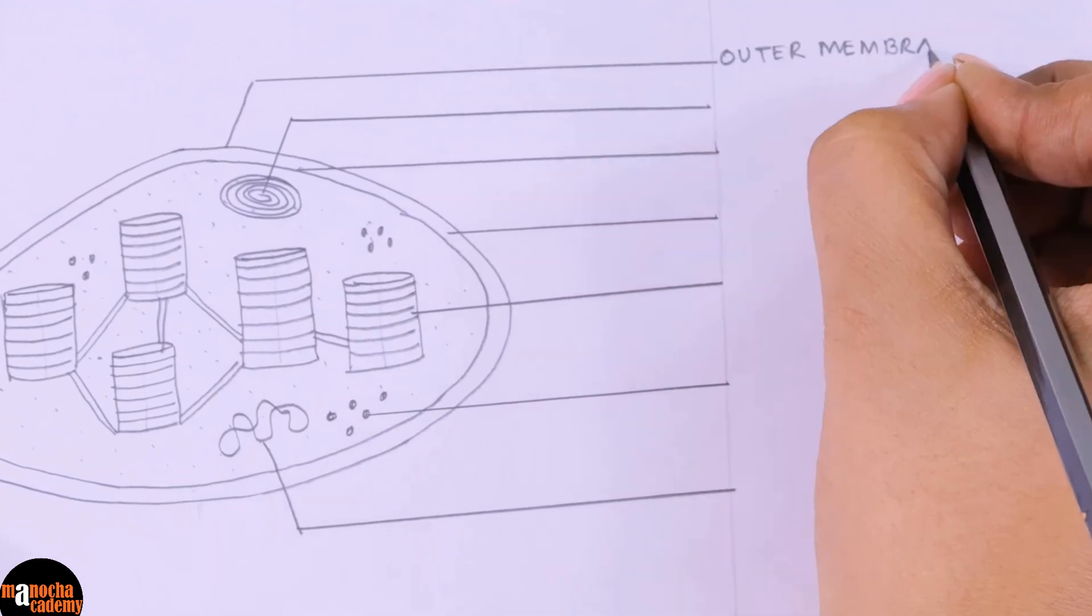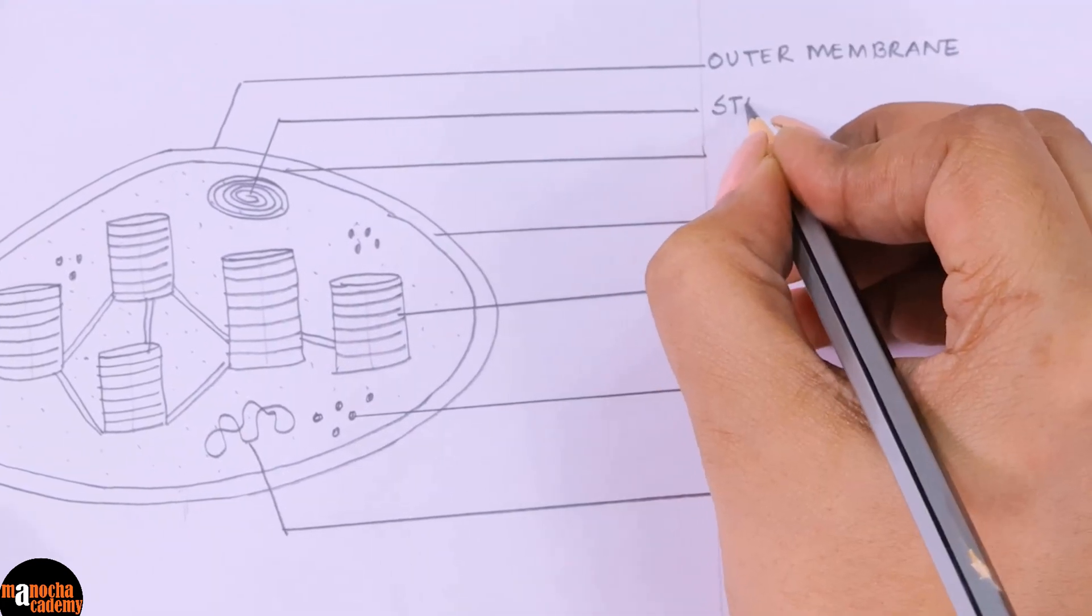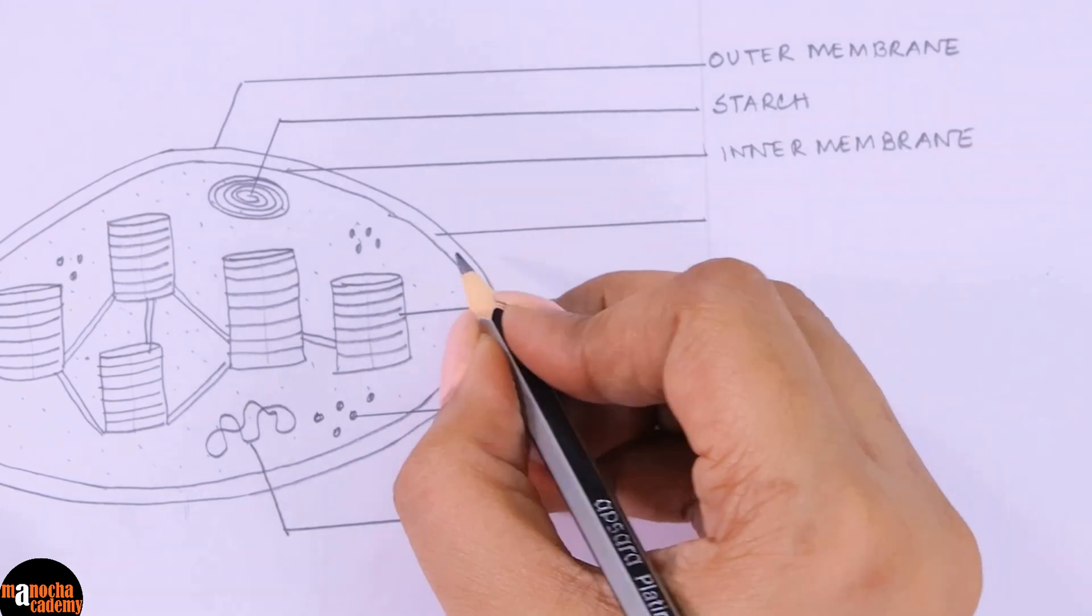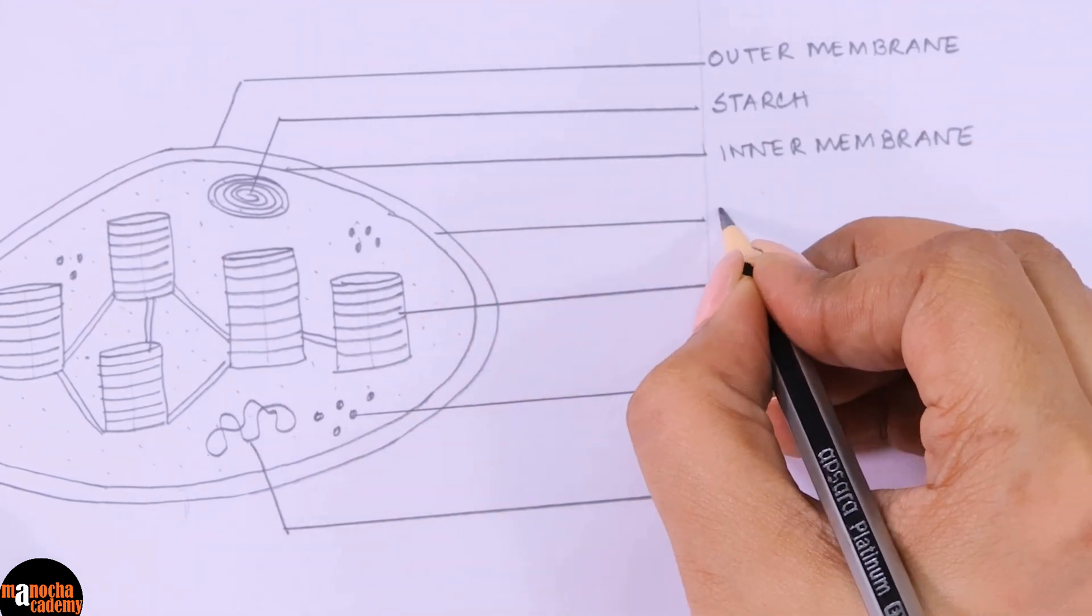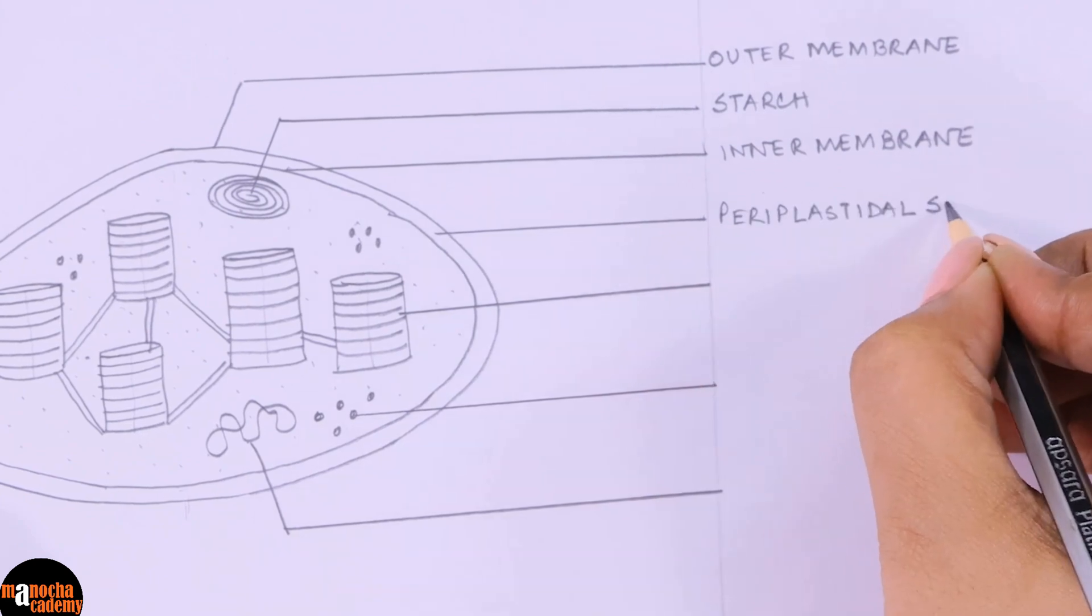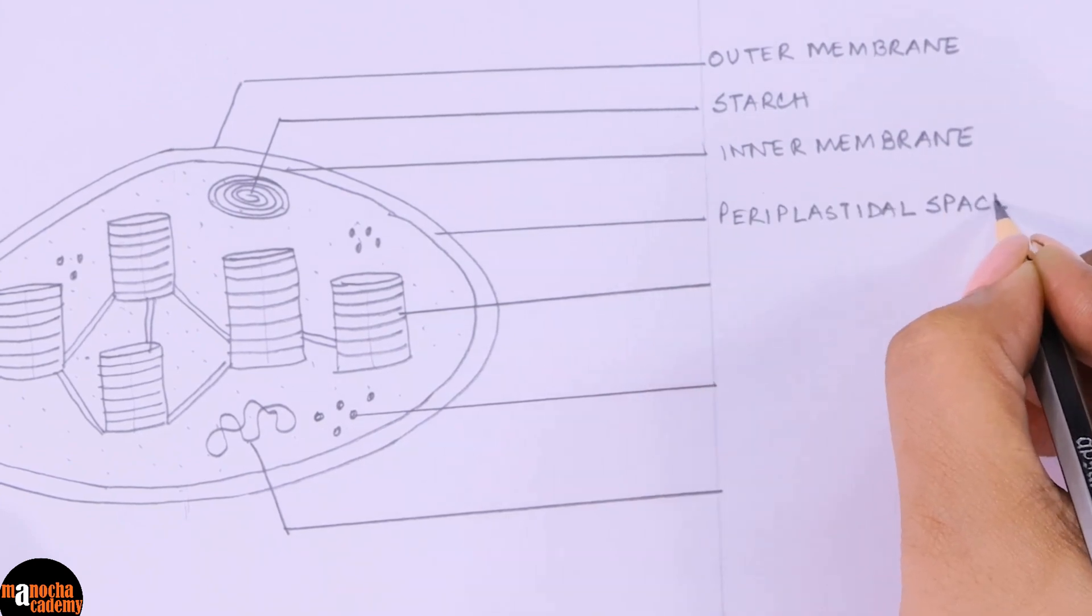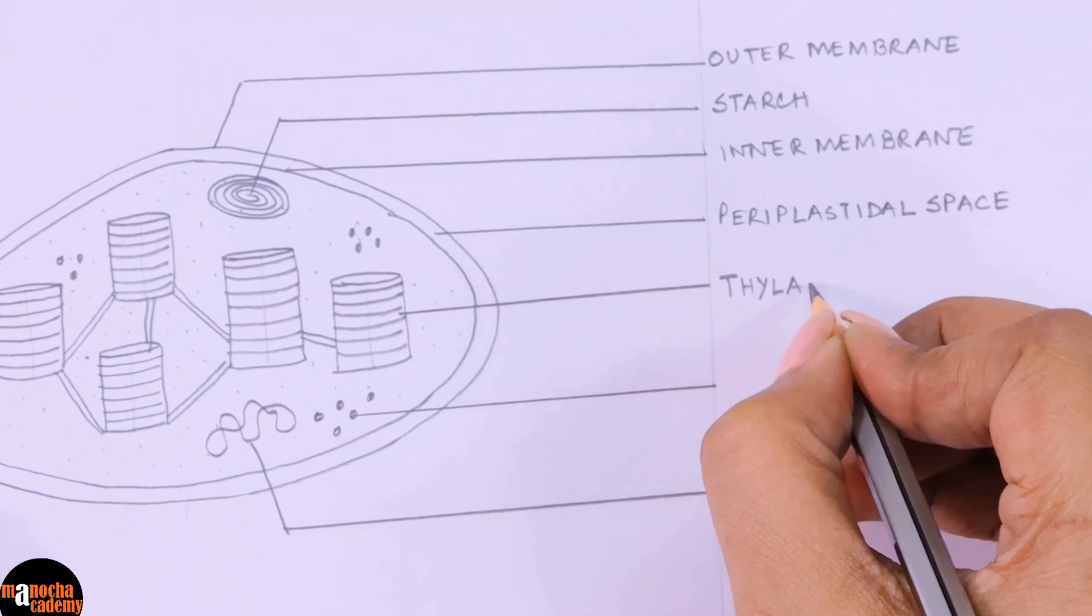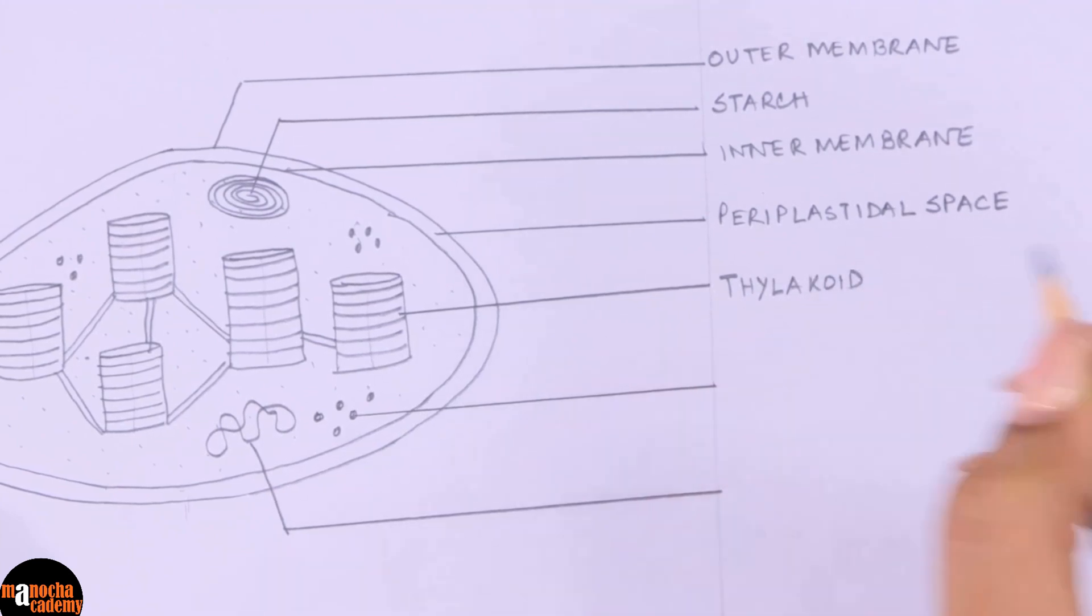This is the outer membrane. This is starch. This is the inner membrane. This is the space in between the two membranes, known as the periplastidal space. This is the thylakoid. Since we are labeling only one, this is the thylakoid.